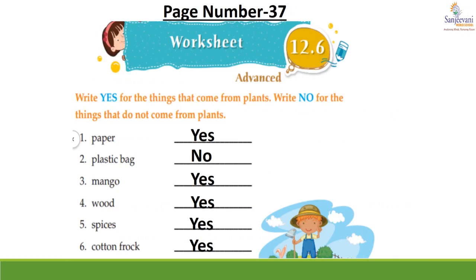Children, now come to page number 37, worksheet 12.6 — write yes for the things that come from plants and no for the things that do not come from plants. First: paper — yes. Second: plastic bag — no. Third: mango — yes. Fourth: wood — yes. Fifth: spices — yes. Sixth: cotton frock — yes. Seventh: rice — yes.